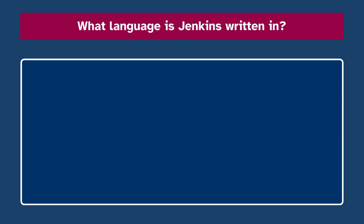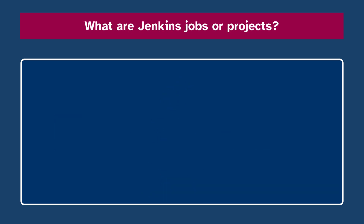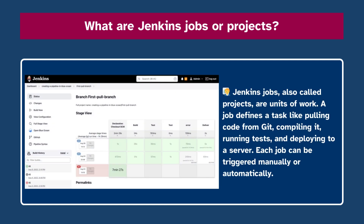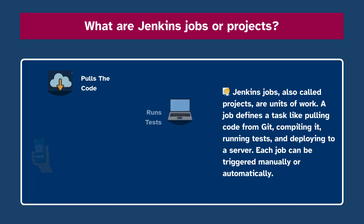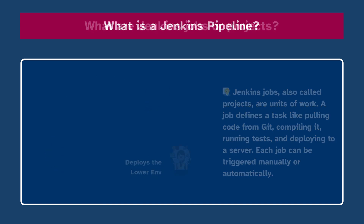Number four: What language is Jenkins written in? Jenkins is primarily written in Java and runs on any platform with a Java Runtime Environment. Number five: What are Jenkins jobs or projects? Jenkins jobs, also called projects, are units of work. A job defines a task like pulling code from Git, compiling it, running tests, and deploying to a server. Each job can be triggered manually or automatically.